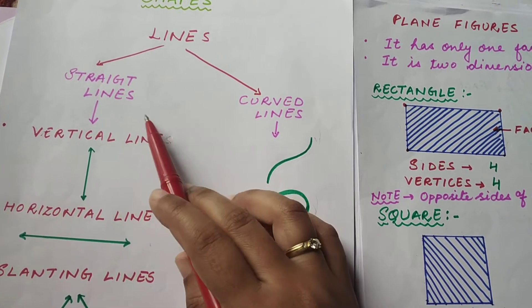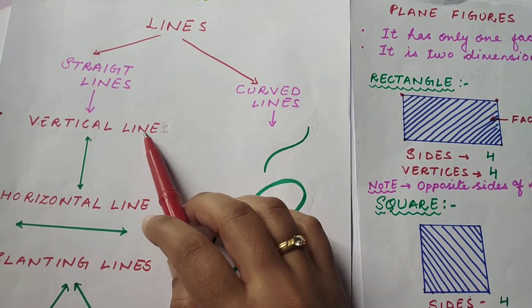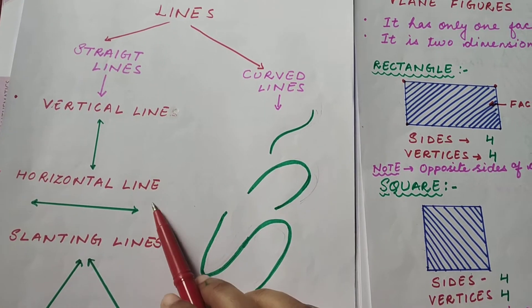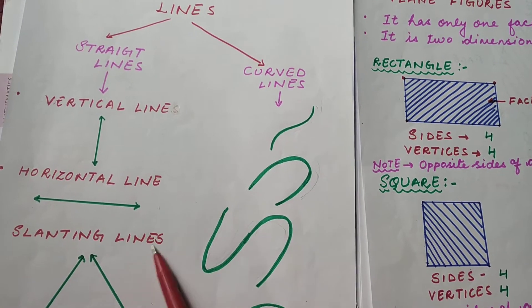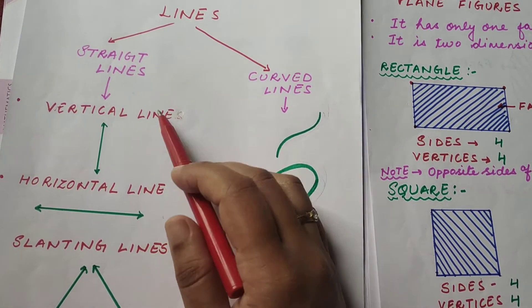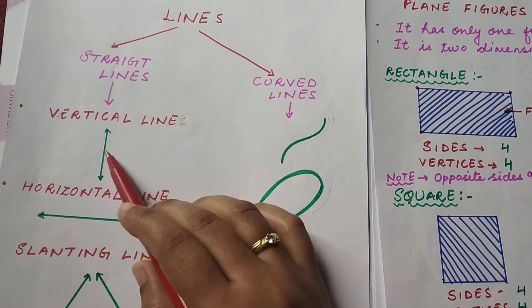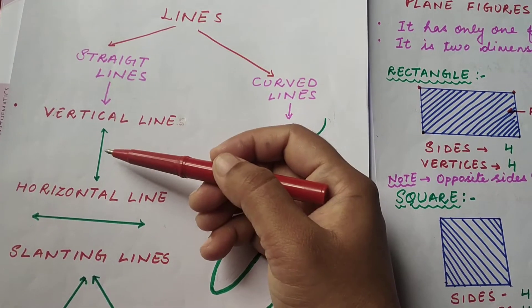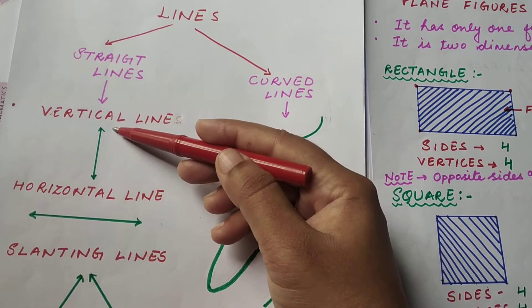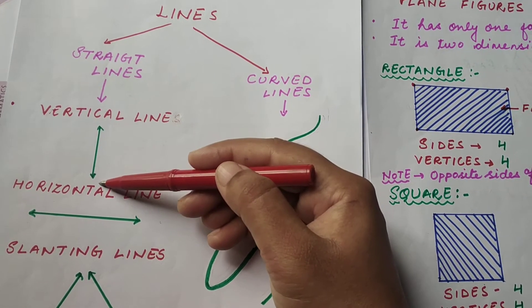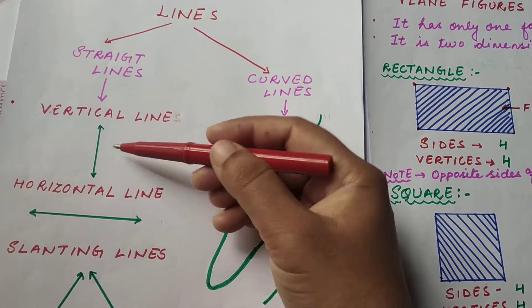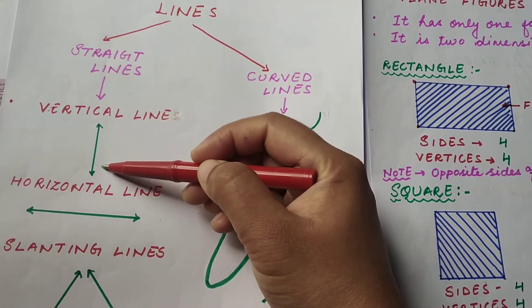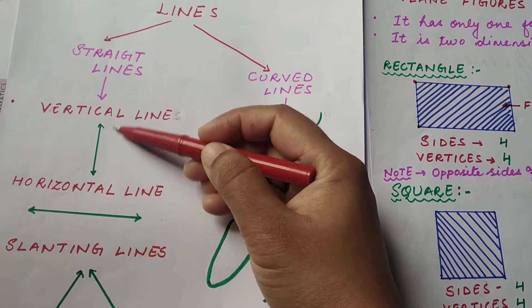Straight lines are again classified into three parts: vertical line, horizontal line, and slanting line. Vertical lines are those which we draw from top to downward, in this way. This is a vertical line.